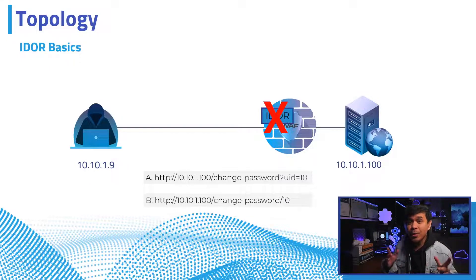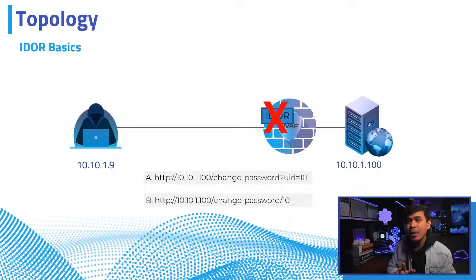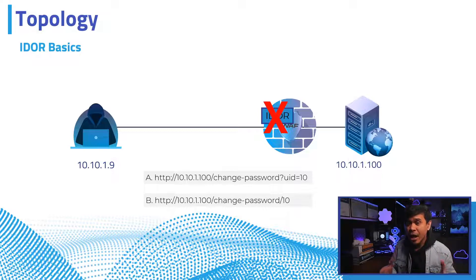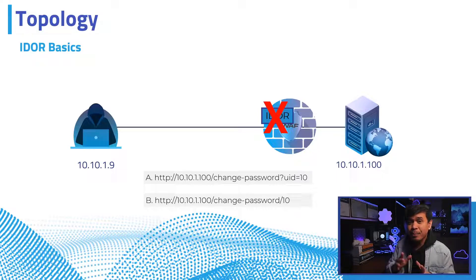If we use option A, we would be using dynamic parameter configuration in our F5 security policy. Basically, what it does is map the user ID value to the session cookie when the user logs in. If the user ID value has been changed, the web application firewall will detect it as an invalid parameter signature. But since we're using option B — the URL path parameter — we will be using a different approach.